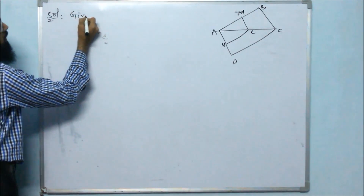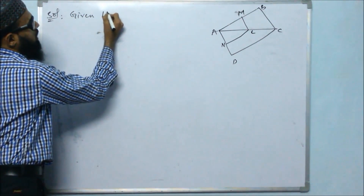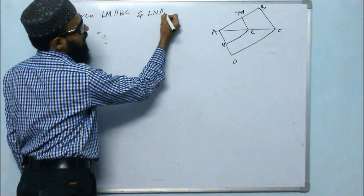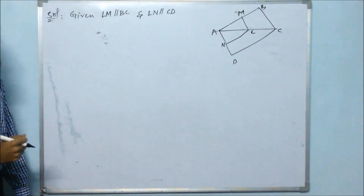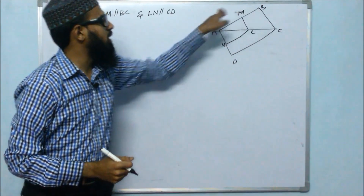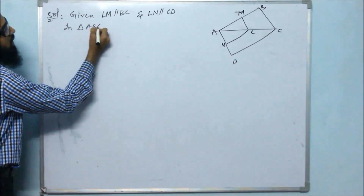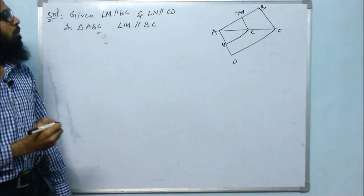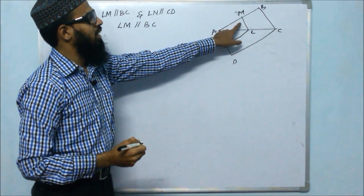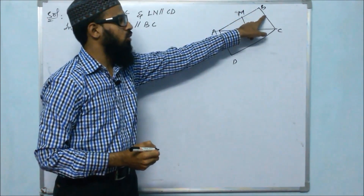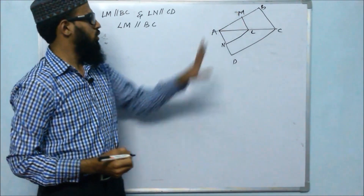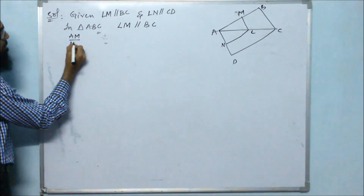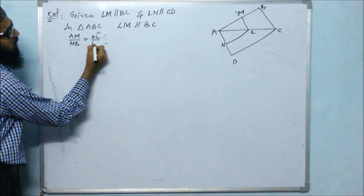Given that LM is parallel to BC and LM is parallel to CD. If we consider triangle ABC, in triangle ABC, LM is parallel to BC. According to the Basic Proportionality Theorem, if one side is parallel to the third side, then it divides the other two sides in equal ratio. So, as per that rule, we get Am/Mb = Al/Lc.